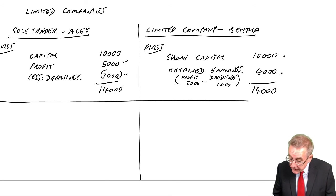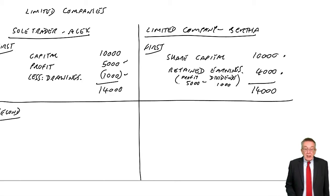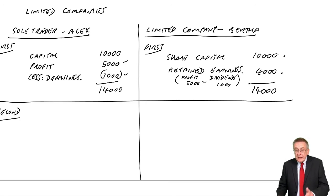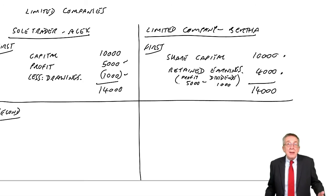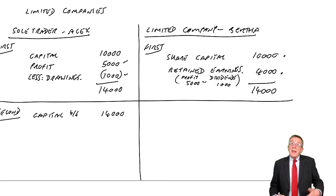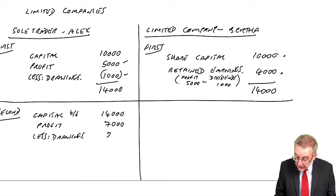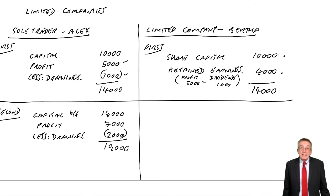Looking at the second year: for the sole trader, the capital brought forward was 14,000. We add on the second year's profit of 7,000 and subtract drawings of 2,000, giving a total capital at the end of the second year of 19,000.